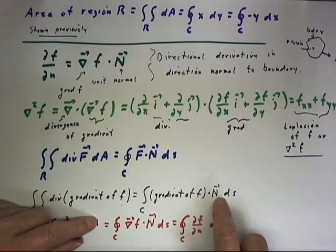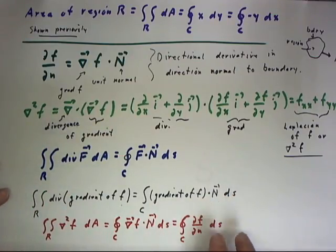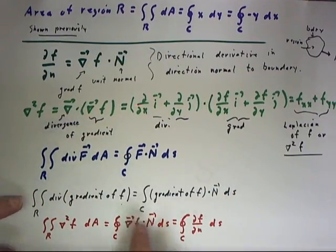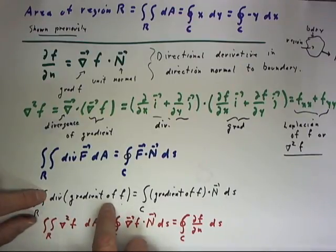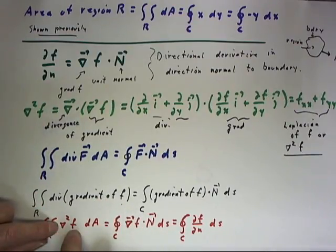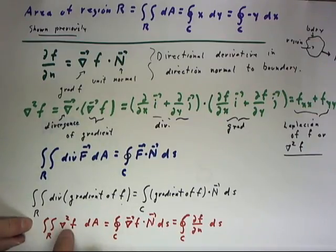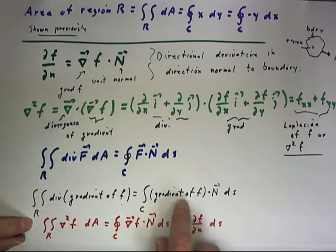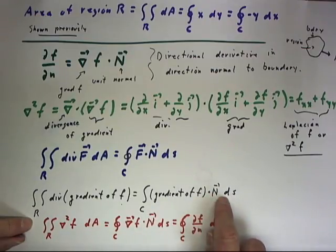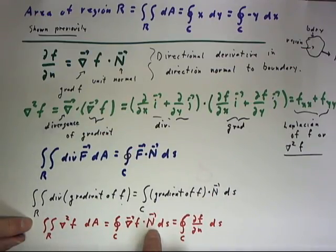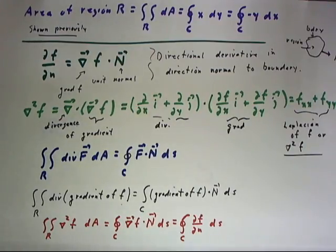The gradient of f dotted with n with respect to arc length. The divergence of the gradient is just del squared f. So the integral over the region of del squared f with respect to area equals the gradient of f dotted with n — which is exactly our definition of the normal derivative.